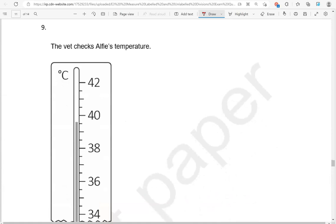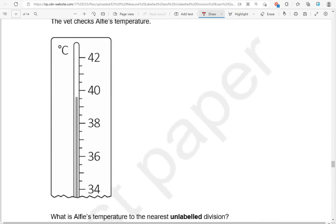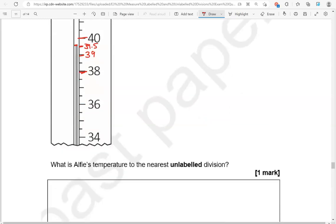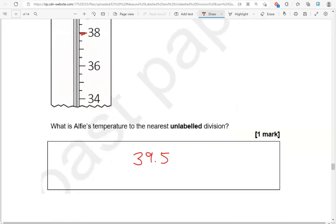The vet checks Alfi's temperature. What is Alfi's temperature to the nearest unlabeled division? It's in between 38 and 40. 39 will be here. So this is the nearest division, nearest unlabeled division. Between 39 and 40, that will be 39.5 degrees Celsius.